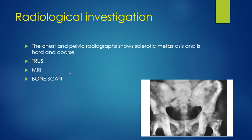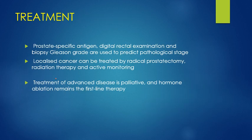For radiological investigation, a plain X-ray of the pelvis is done and it can show sclerotic metastasis with a coarse appearance. Transrectal ultrasound, MRI, and bone scan can also be performed.